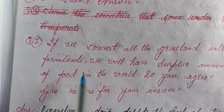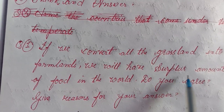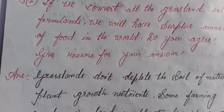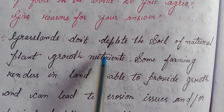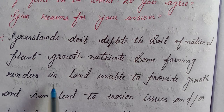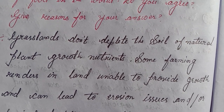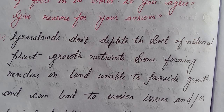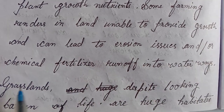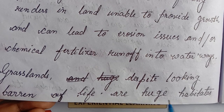Question D: If we convert all the grasslands into farmlands, we will have a surplus amount of food in the world. Do you agree? Give reasons for your answer. Answer: Grasslands don't deplete the soil of natural plant growth nutrients. Some farming renders land unable to provide growth and can lead to erosion issues and chemical fertilizer runoff into waterways. Grasslands, despite looking barren, are huge habitats.